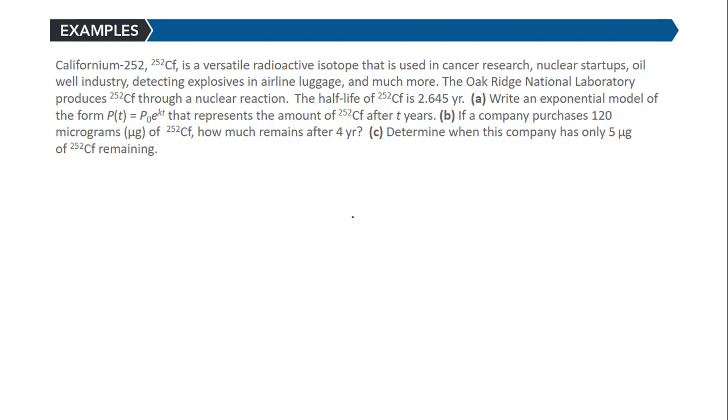We want to write an exponential model of the form P(t) = P₀e^(kt) that represents the amount of Californium-252 after t years. Then, if a company purchases 120 micrograms of this isotope, how much remains after four years? And we want to determine when this company has only five micrograms remaining.